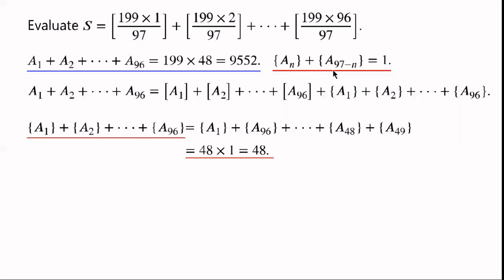The decimal part of aₙ plus the decimal part of a₉₇₋ₙ equals 1, so each pair of decimal parts equals 1. There are 48 pairs, so the total sum of decimal parts equals 48 times 1, which equals 48.